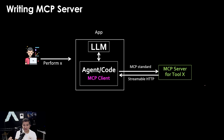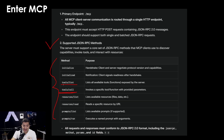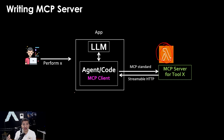The underlying functionality of the tool fulfills some business purpose — you can use something like Lambda or Kubernetes to write your business code. But that's not enough, because the agent cannot simply connect to your Lambda via some API without breaking the MCP protocol. The Lambda also needs to respond to the protocol methods. The Lambda needs to fulfill all the JSON-RPC methods that MCP implements, so you have to write business code and also implement the MCP standards as a wrapper.